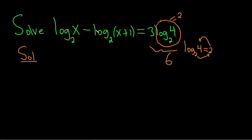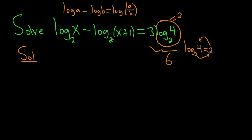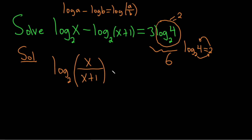Whenever you have a minus, it turns into a fraction — the subtraction turns into a fraction. Remember, if you have log of a minus log of b, that equals log of a over b. So here it'll be log base 2 of x over x plus 1, and that equals 6.